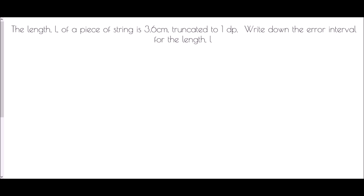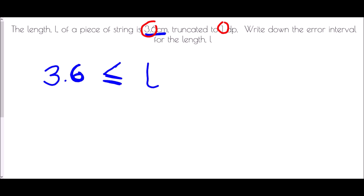For the length l of a piece of string, we're told it's 3.6 centimetres truncated to one decimal place. We want to write down the error interval for l. Because it has truncated to 3.6 centimetres, that is the absolute minimum — the smallest value it could possibly have been — so we use an equals-to sign there. At the other end, the next value up would be 3.7. The upper end will only be a less-than sign, not equals-to, because it is any value up to 3.7 but not including it. So the error interval is 3.6 ≤ l < 3.7.